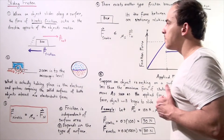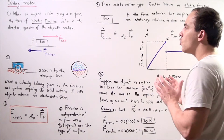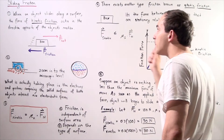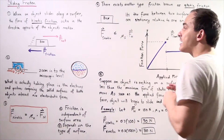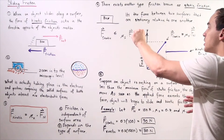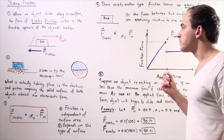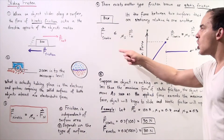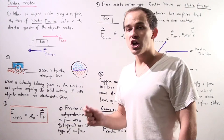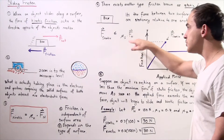Let's suppose we take the same box and it is no longer sliding — it's stationary. If I try to push the box with a force that's less than the maximum of our static frictional force, my object will not move because static friction is opposing my motion. The formula for static friction is given by the following equation: the magnitude of static friction is less than or equal to the coefficient of static friction multiplied by the normal force. In other words, the maximum force of static friction equals the coefficient of static friction multiplied by the normal force.